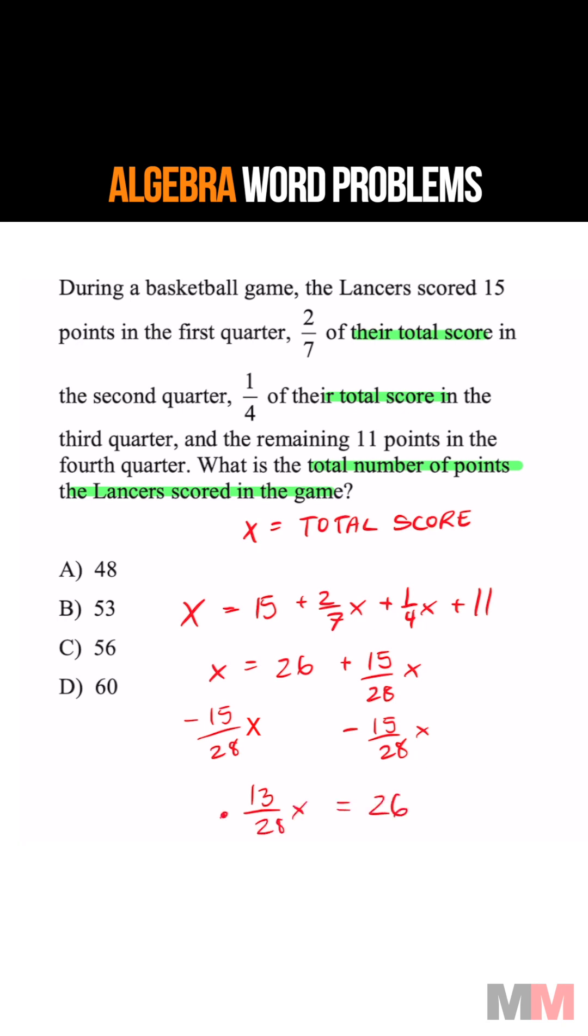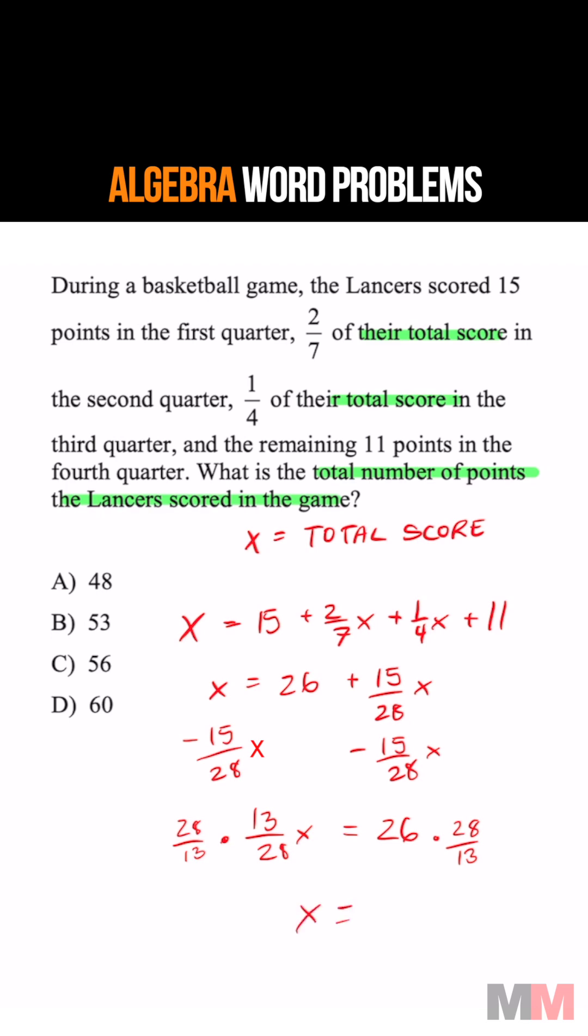Just multiply by the reciprocal, and that is going to get me X equals 56 points altogether. Letter choice C. Peace.